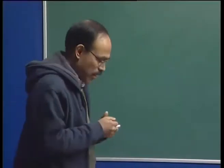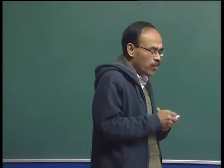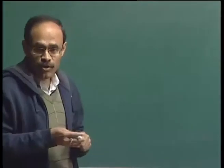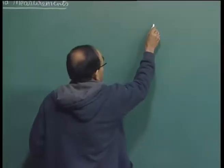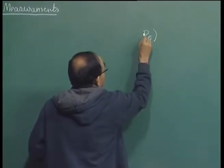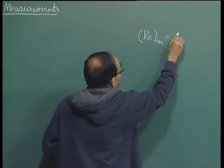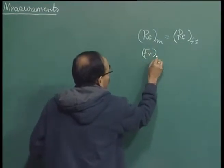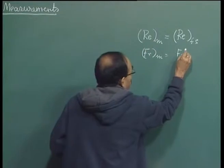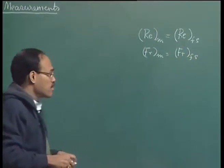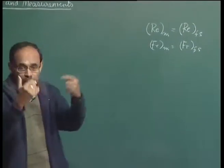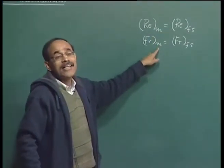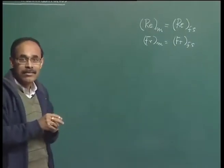I have indicated that in systems where inertial forces, gravitational forces, viscous forces, and pressure forces are only relevant, the similarity can be expressed in terms of two limiting conditions: the Reynolds number in the model equals the Reynolds number in the full scale, and the Froude number in the model equals the Froude number in the full scale. If you can maintain these two equalities, the systems are dynamically similar.